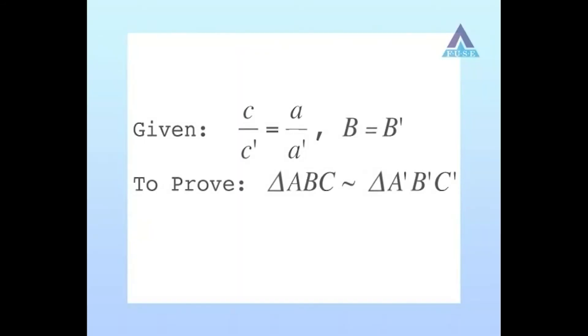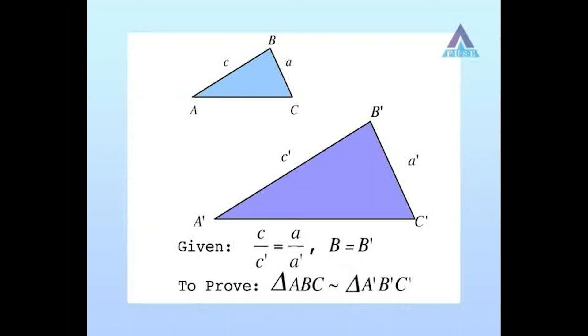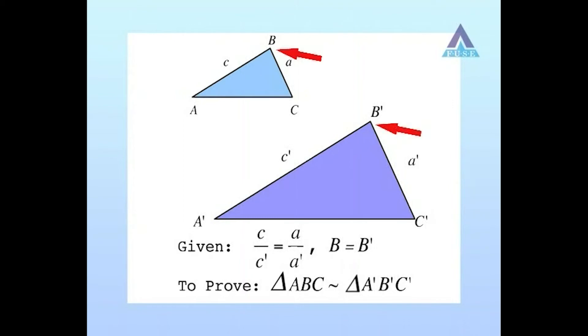I think you need to specify the given conditions in the hypothesis of the theorem in relation to the figures you have drawn. The hypothesis requires two conditions to be satisfied. First, two pairs of corresponding sides are supposed to be proportional. In my illustration, I chose sides C and C', then A and A', so that C over C' equals A over A' holds. Second, the included angles — angles B and B' — must be equal in measure.